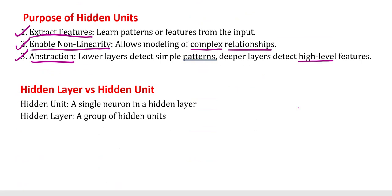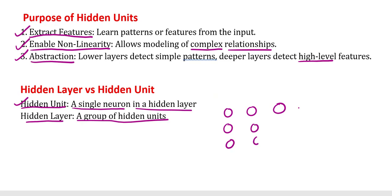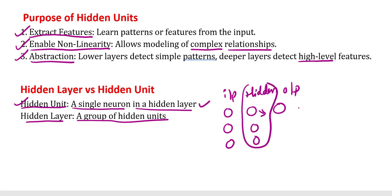A single neuron in a hidden layer is called a hidden unit. A hidden layer means a group of hidden units. So a single neuron in a hidden layer is one hidden unit, but the hidden layer refers to all the neurons together — for example, neurons one, two, and three together form the hidden layer.